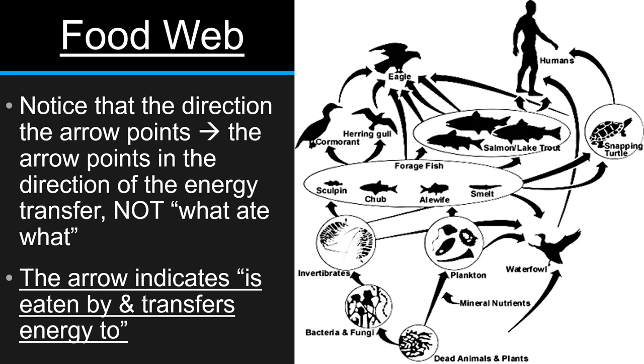One thing to really notice is the arrows. The arrow points in the direction of the energy transfer, not what ate what. That's a big misconception that we see very often when it comes to food chains and food webs. People say the arrow's pointing to this, it means that ate that, but that's not true. The arrow indicates it's eaten by and transfers energy to. For example here, we see a duck right here. If it was what ate what, it means that the duck would actually be eating the human, which is not happening. Instead, the duck is transferring its energy to the human. And once again, in our next video, we'll discuss how that energy is transferred and what happens to it as it goes along, and why it's a pyramid.